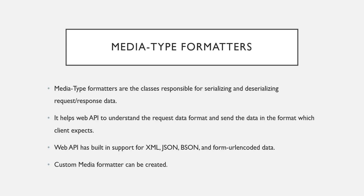Suppose you want to handle a different data format, such as CSV — comma separated data. If you want to convert comma separated data to a .NET object, that functionality is not provided by default. In that case you can write your own custom media formatter to serialize and deserialize CSV data. Creating a custom media formatter is not in scope for this video — we will learn that later — but the concept of what is media type and what is a media type formatter should now be clear.